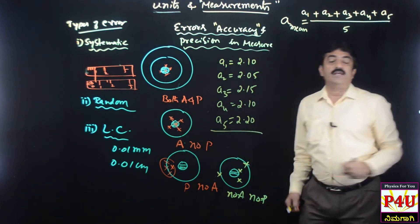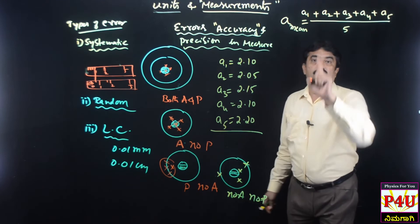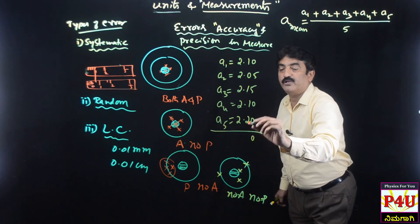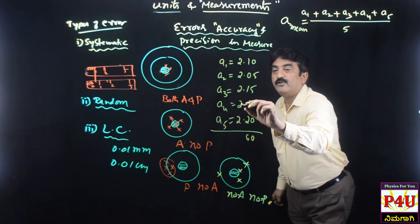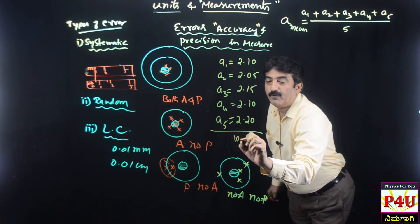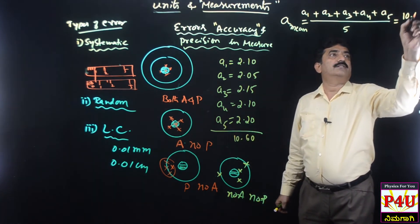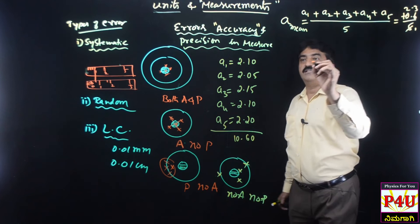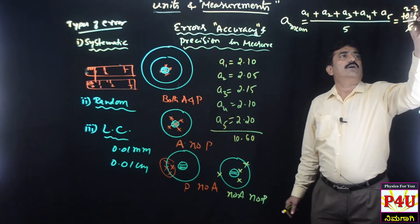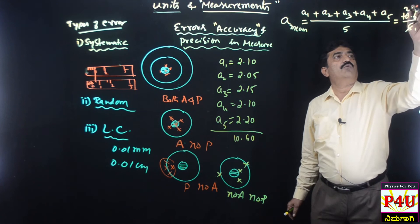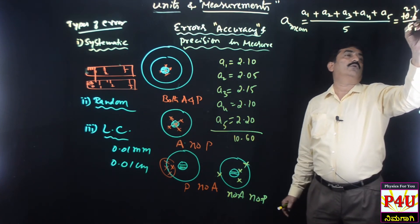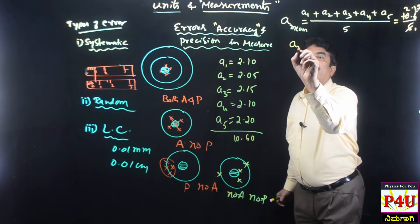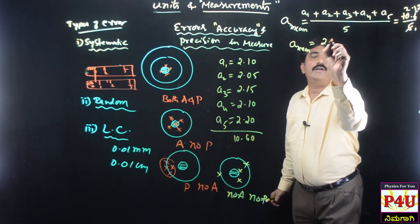This total divided by 5 gives the mean value A̅. The total is 10.6, so 10.6 divided by 5 gives A mean value equal to 2.12.